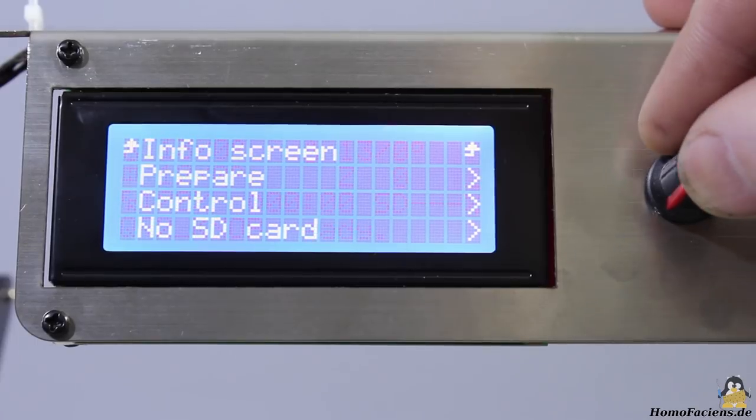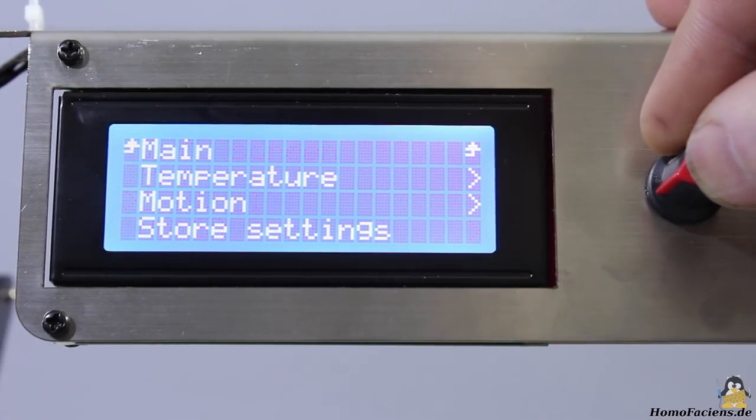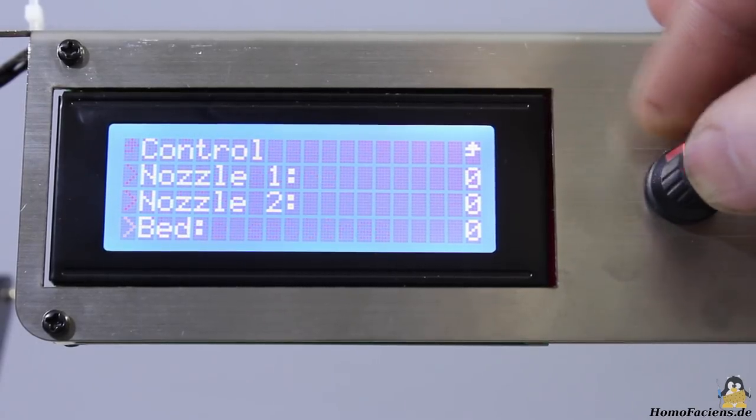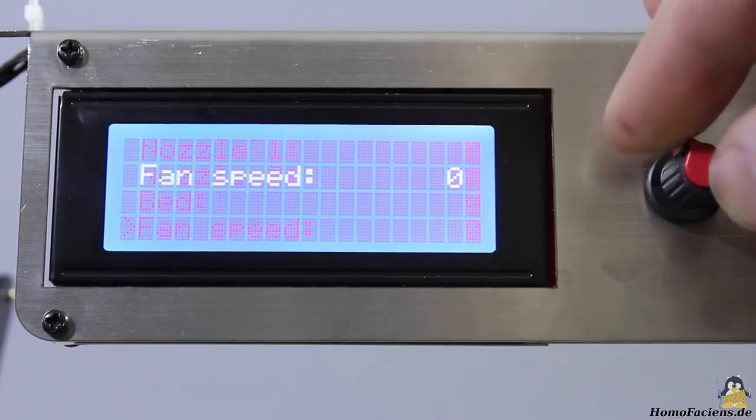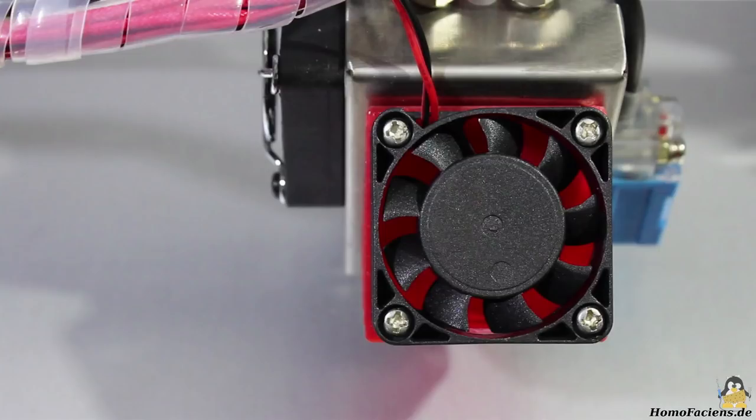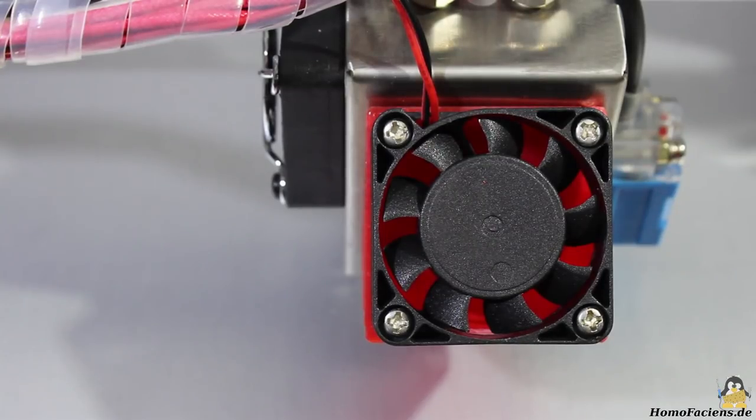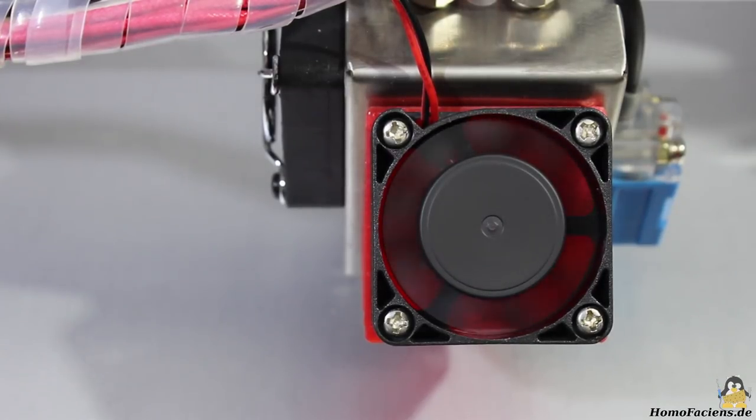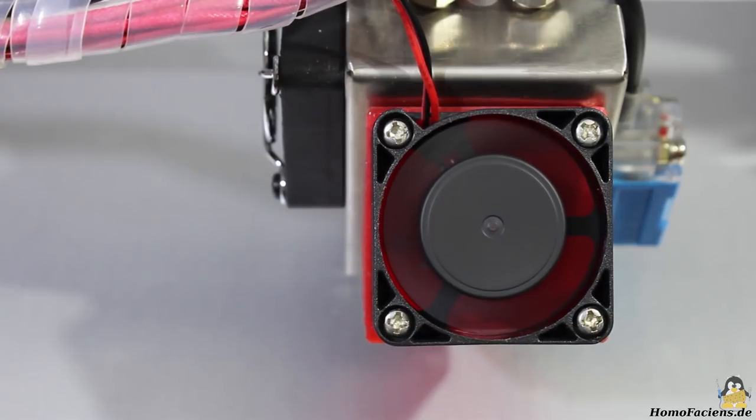Two extruders instead of just one means there are more things that might go wrong. As a first test, I'm turning the cooling fan on. The fan at the front of the print head must start spinning. If the second fan on the left side spins instead, you must swap the plugs on the main board.